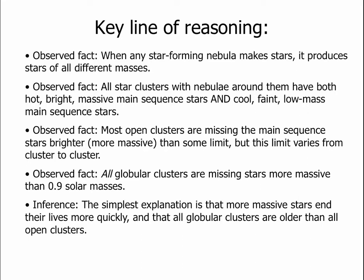If we look at most open clusters that do not have nebulae around them, we often find that the brightest, hottest, bluest, most massive stars are missing. Below some mass threshold — which varies from cluster to cluster, perhaps one, three, or five times the mass of the Sun — we see all the stars in the main sequence. But brighter and more massive than that limit, we don't see the stars, and where that limit falls varies from cluster to cluster.